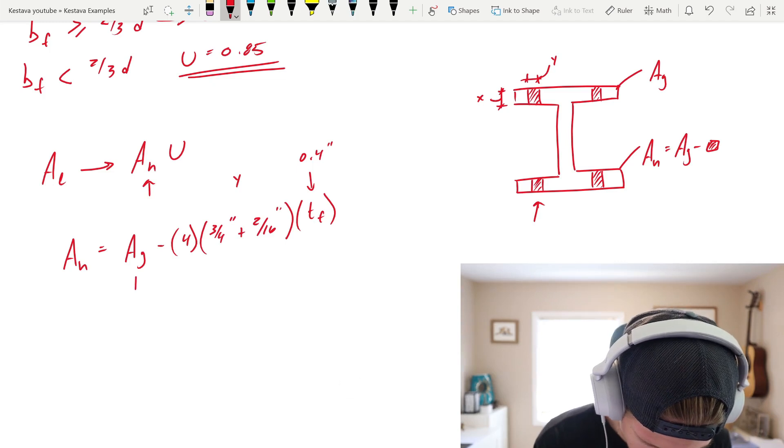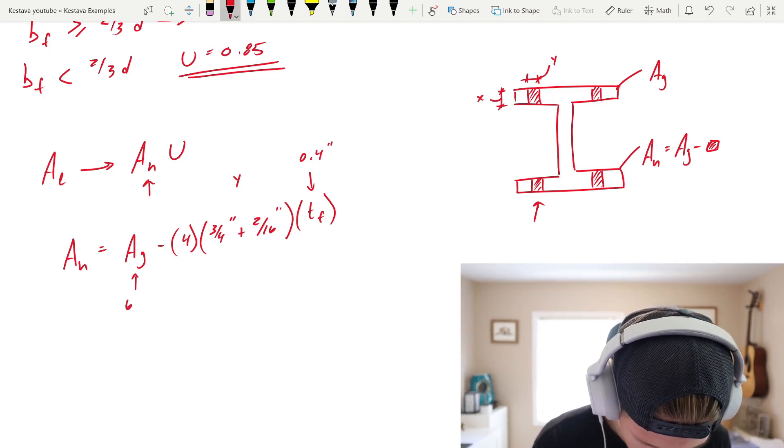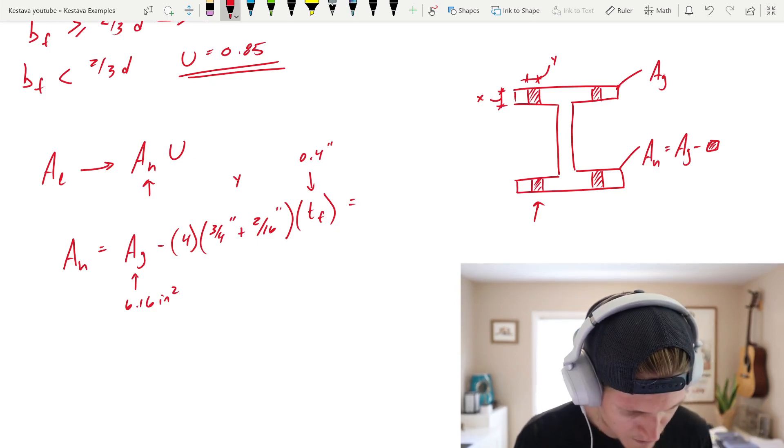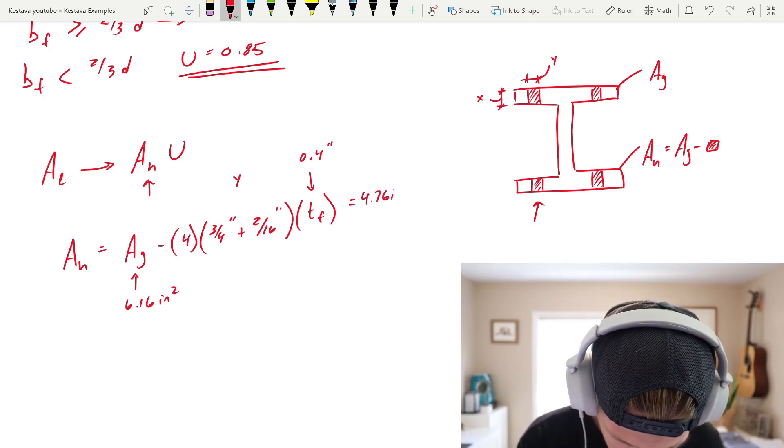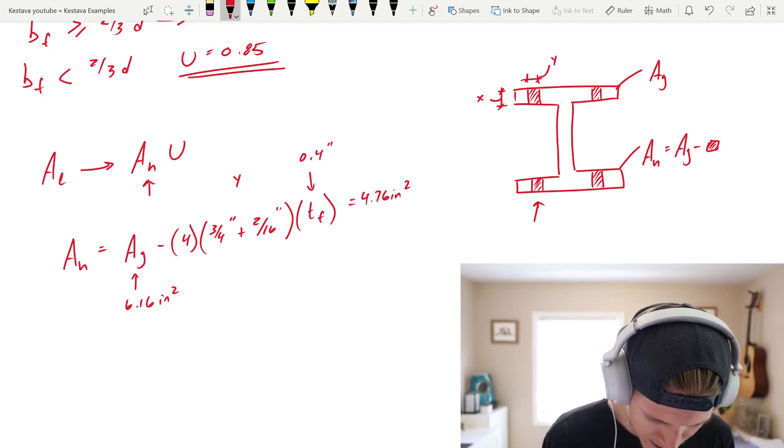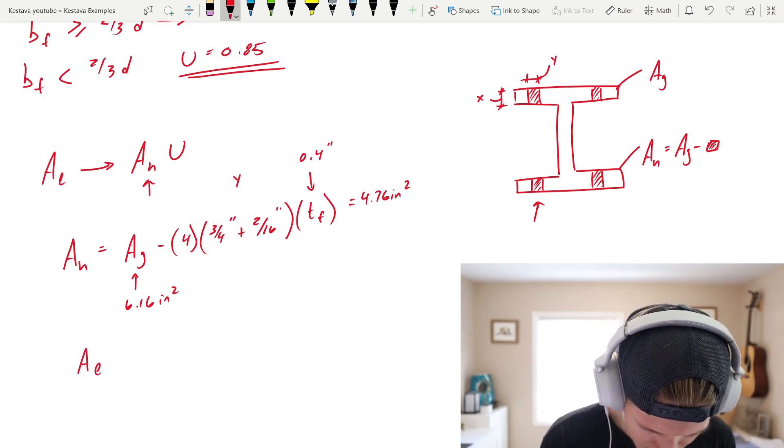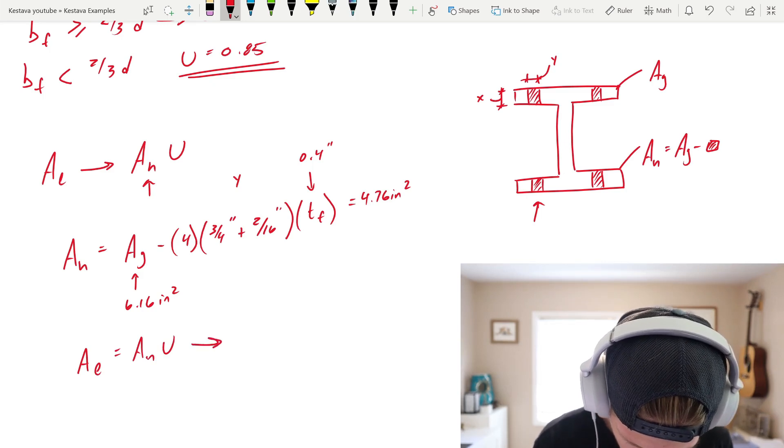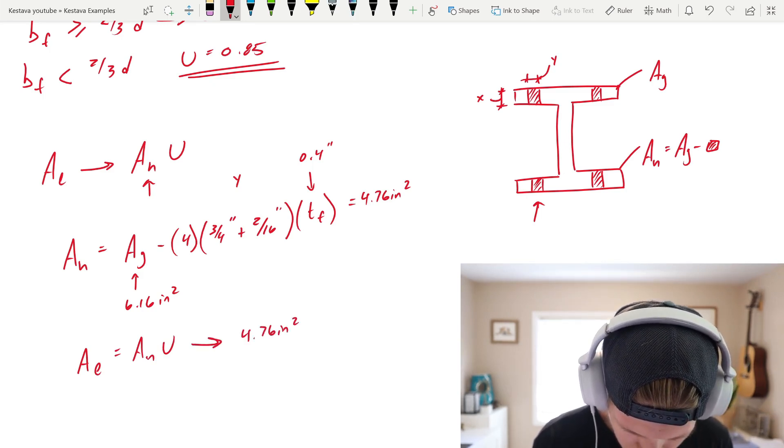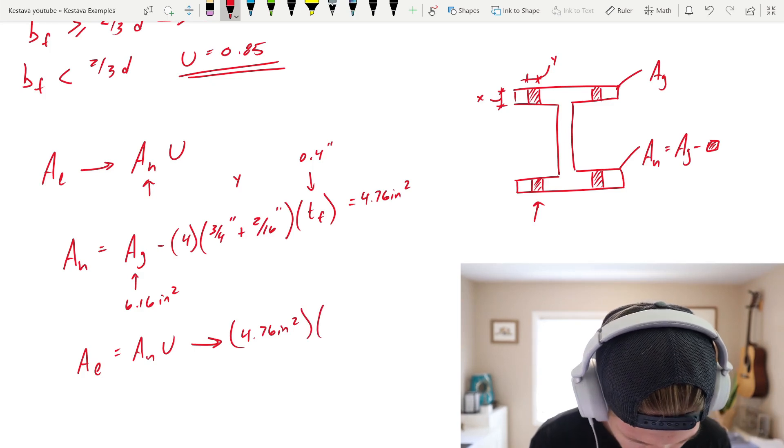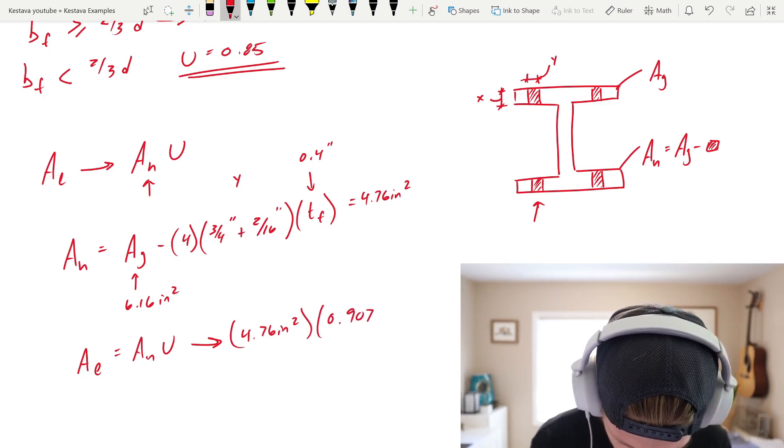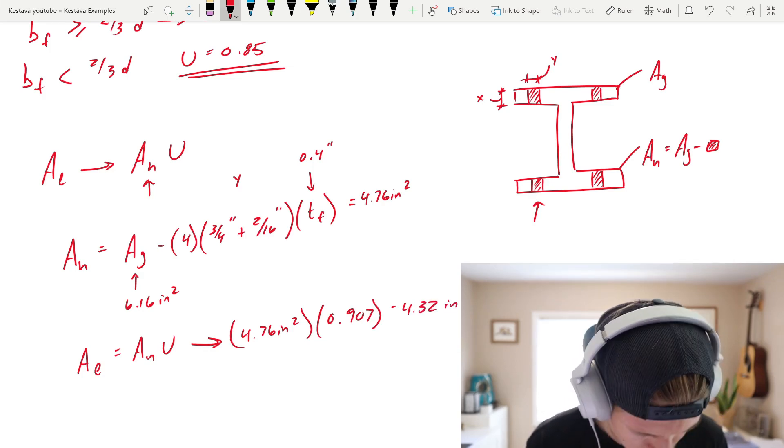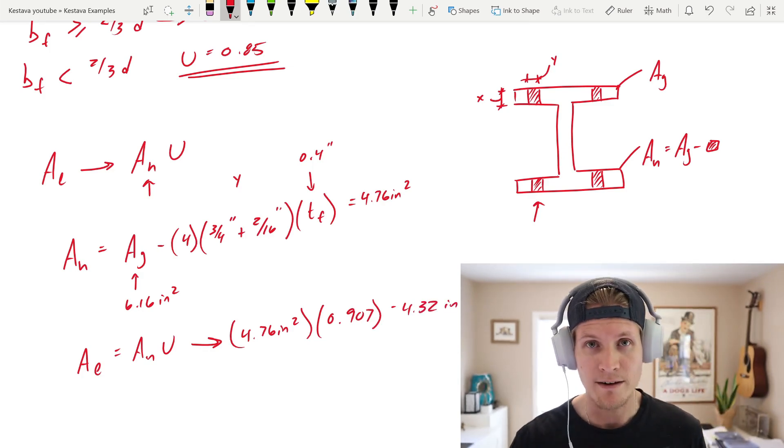So, AG, again, table 1.1 is 6.16 inches squared. That gets us an A sub N equal to 4.76 inches squared. And again, we're still not there yet because AE equals AN times U which goes to 4.76 inches squared times U of 0.907 gets us 4.32 inches squared is our effective net area.